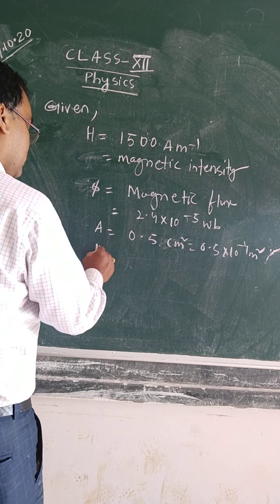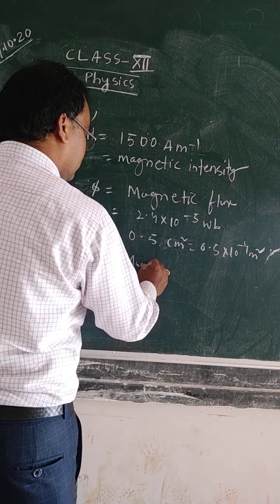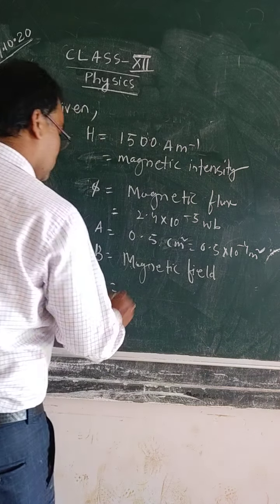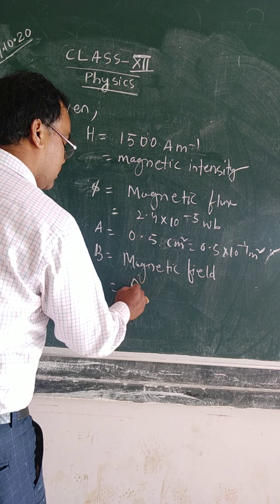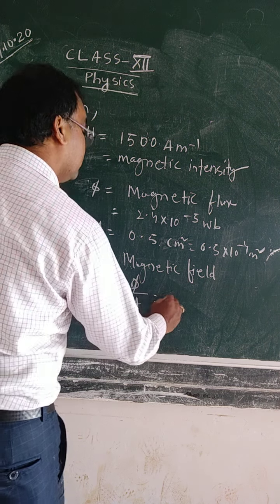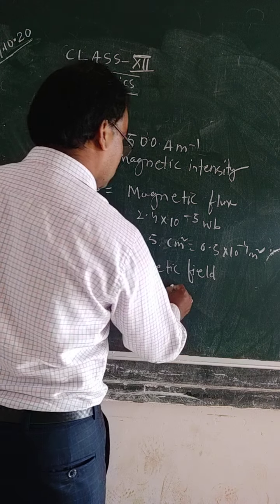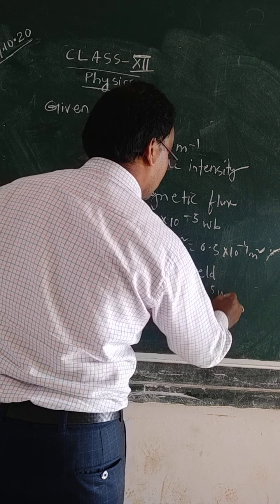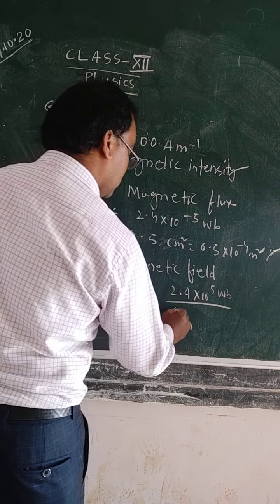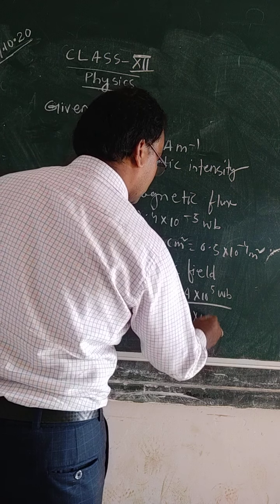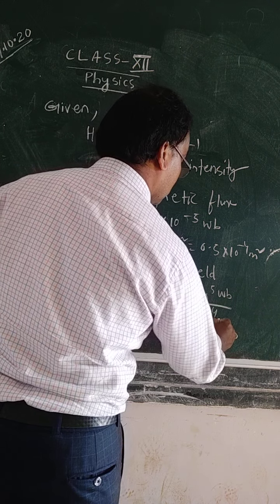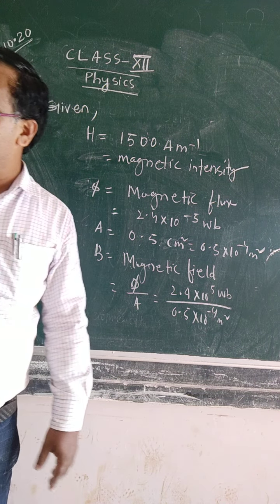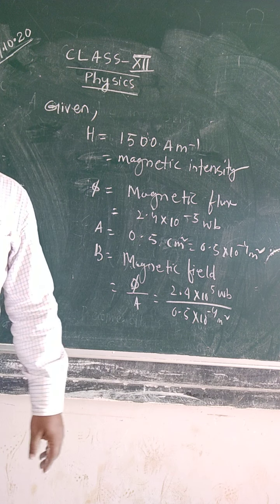Now magnetic field B can be found from flux divided by area, since phi is equal to B into A. So B equals 2.4 into 10 to the power minus 5 divided by 0.5 into 10 to the power minus 4 meter square, which gives 0.48 Tesla.